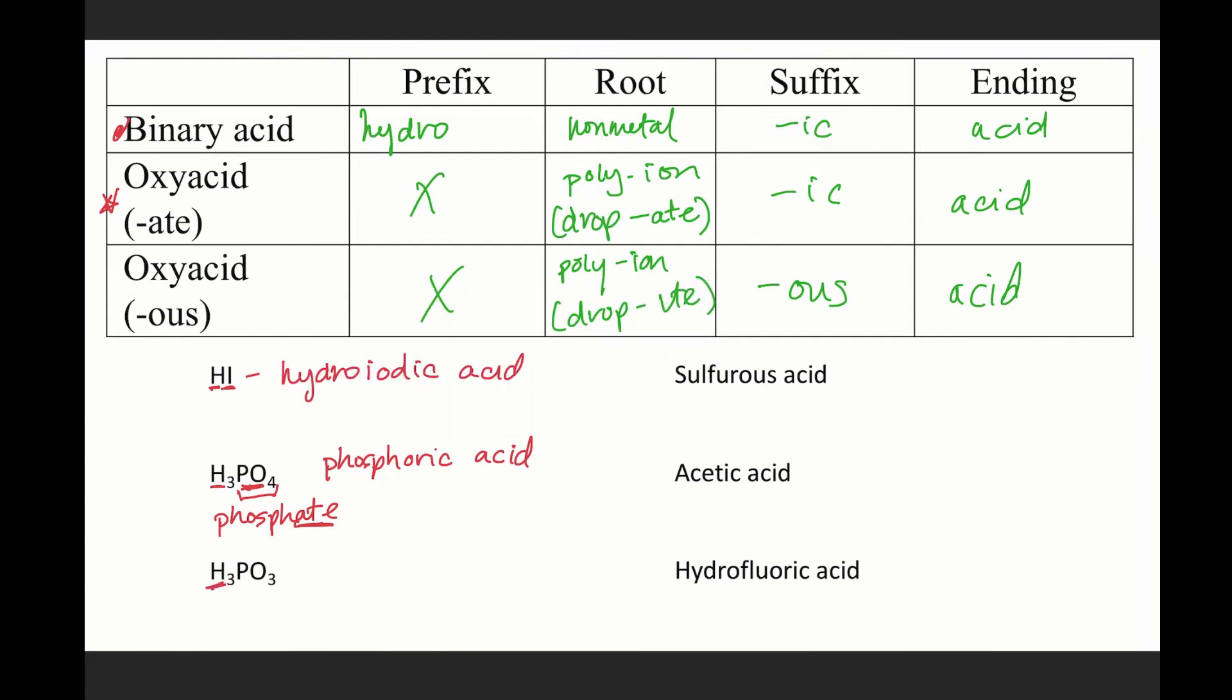So if we look here, we have H3PO3, definitely an oxyacid, and what's PO3 called? One less, so phosphite, which means that we would follow that model, which says phosphorous acid. Where the ite just got replaced with the us, and we added back that syllable for the phosphorus.